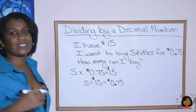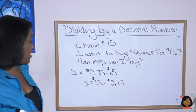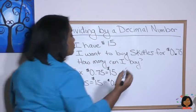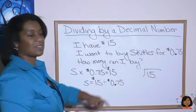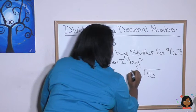Okay. So what's our dividend here? Our dividend is the $15. Let's put that underneath this division bar. And what goes on the outside? Our 75 cents. Okay.